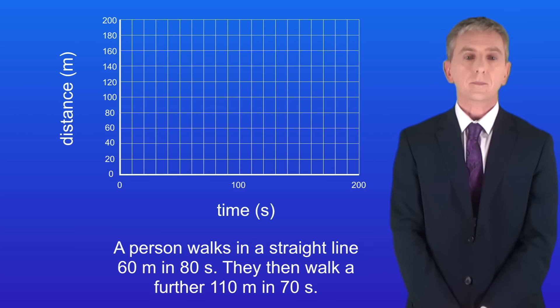Here's one for you to try. A person walks in a straight line 60 meters in 80 seconds. They then walk a further 110 meters in 70 seconds. I'd like you to plot a distance-time graph for this journey. So pause the video now and try this yourself.